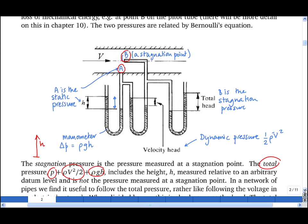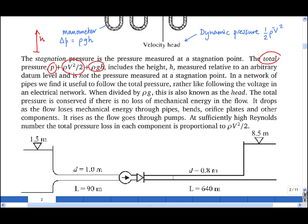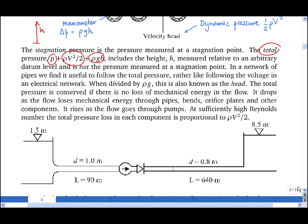And in a network of pipes, we find it useful to follow the total pressure, because we're essentially following the total mechanical energy of the fluid at that point in the pipe. When divided by rho g, this is known as the head.